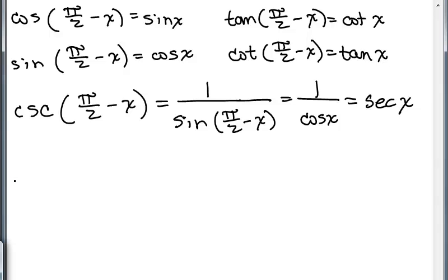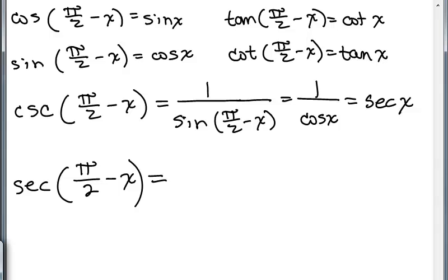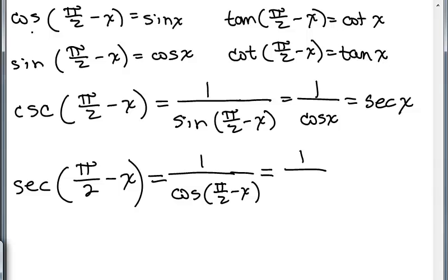One more to go — let's see if you can do it. Put the video on pause and see if you can do the secant of pi over 2 minus X. That's the same thing as 1 over the cosine of pi over 2 minus X. And looking up here, the cosine of pi over 2 minus X is sine X. So that's 1 over the sine of X, which is the reciprocal function — the cosecant of X. And we actually have all six of the cofunction identities now.